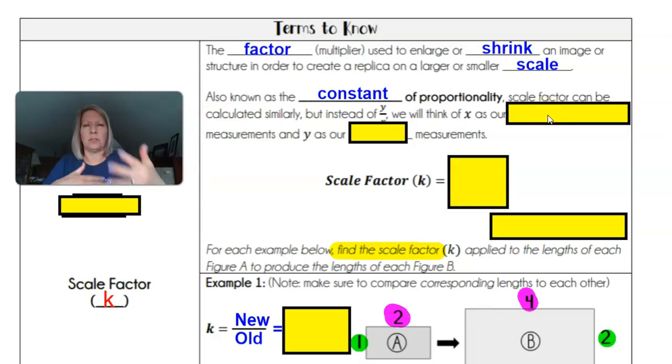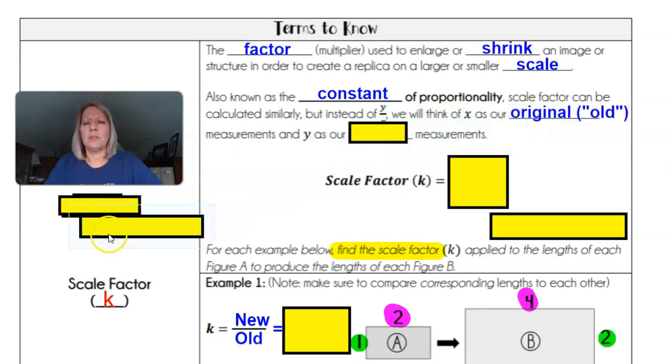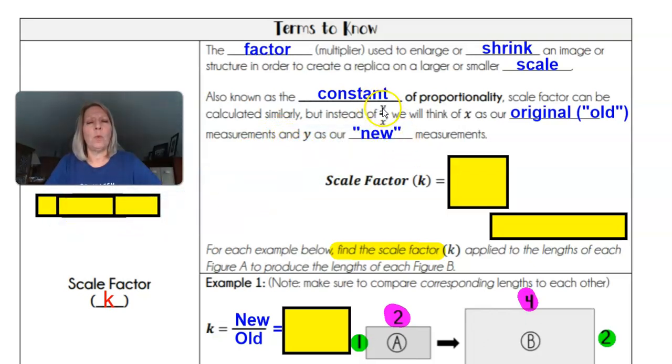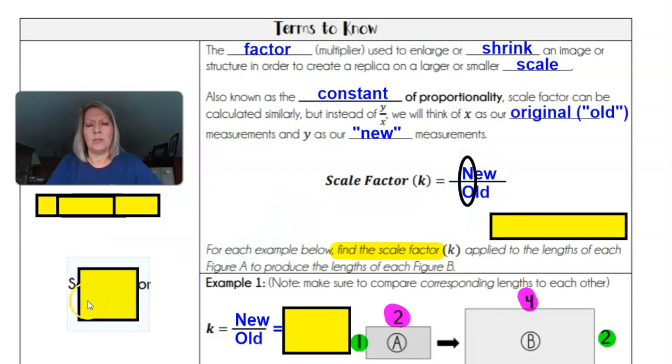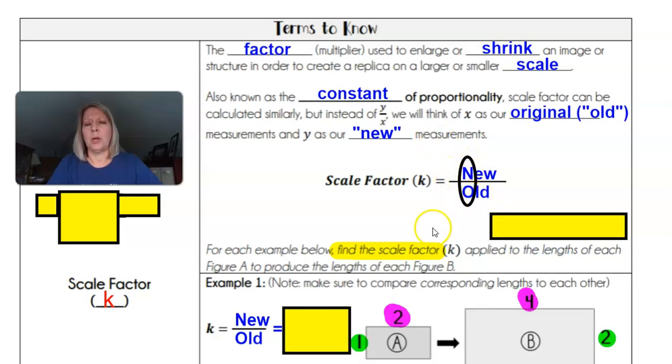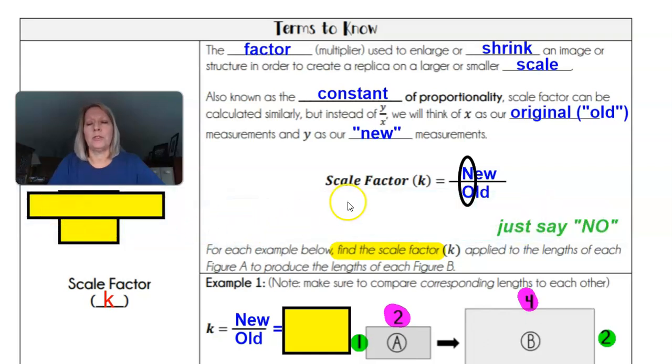Scale factor is also known as the constant of proportionality. Scale factor can be calculated similar to how we calculated constant of proportionality, which is like unit rates. Remember, they have different types of units set against each other and we divide it. So instead of doing Y divided by X, we'll think of X as our original, which are our old measurements, and we'll think of Y as our new measurements. So the scale factor is your constant of proportionality, the lowercase letter k, and it's your new measurement over your old measurement as a ratio. One little catchy thing you could think of for scale factor is just say no: N over the O, new over original.